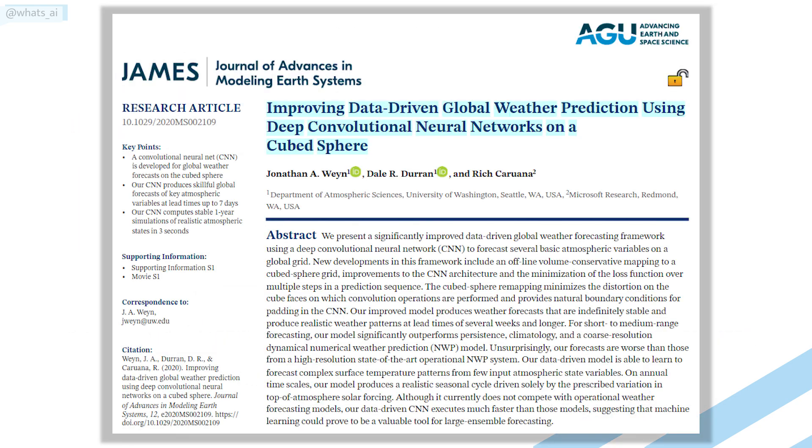Improving data-driven global weather prediction using deep convolutional neural networks on a cubed sphere is a recent paper published by researchers from the University of Washington in collaboration with Microsoft Research. They proposed a new weather forecasting framework using convolutional neural networks producing stable forecasts and realistic weather patterns at lead times of several weeks and longer. The model even significantly outperforms many other techniques for short and medium range forecasting.